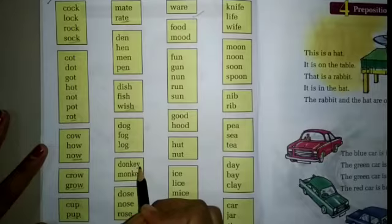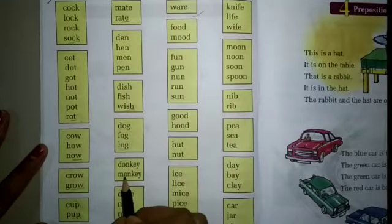D-O-N-K-E-Y Donkey, M-O-N-K-E-Y Monkey. ONKEY is the same ending of these words.